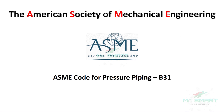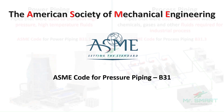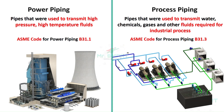The American Society of Mechanical Engineering, or ASME B31 Piping Code, categorizes industrial piping into two main types: power piping and process piping. Power piping deals with systems like steam, boilers, and turbines, which carry high-temperature and high-pressure fluids. Process piping is used in industries such as refineries, chemical plants, and gas handling. Both piping systems have different procedures and codes, and should undergo pressure testing to ensure safety and reliability.